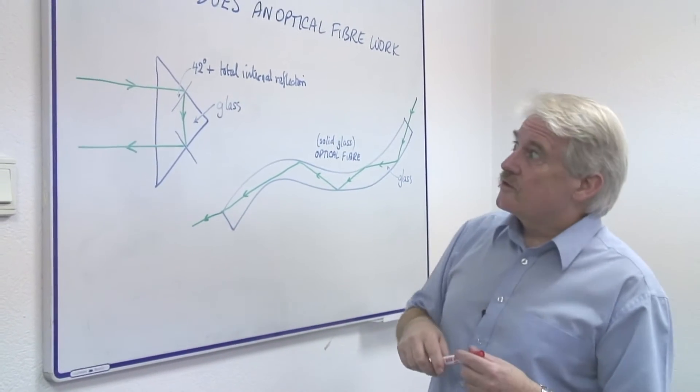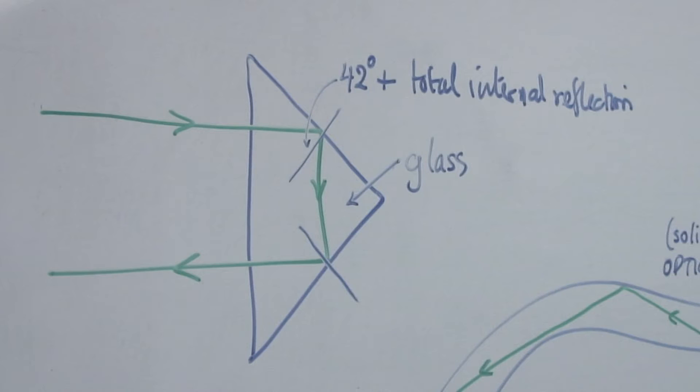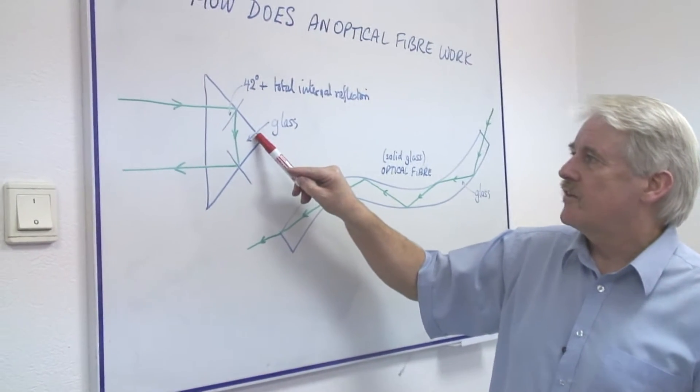Okay, first of all, looking at a more traditional thing, this is a solid prism of glass. A prism triangular in this case, 45 degree, 45 degree 90 prism of glass.